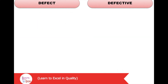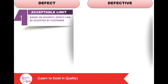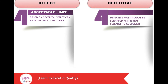On the basis of acceptable limits, a defect can be accepted by the customer depending on how severe it is. For example, a slight typing error in a book is a defect but is still accepted by the customer. Whereas a defective must always be scrapped as it is not sellable. A product is not defective unless the defects prevent it from functioning.